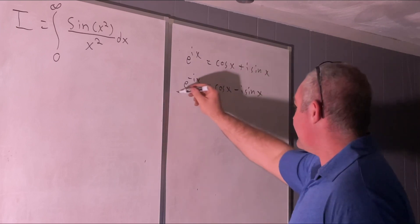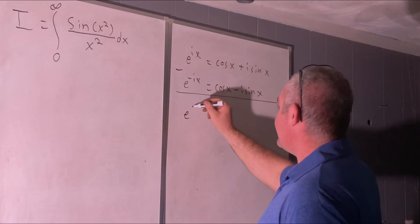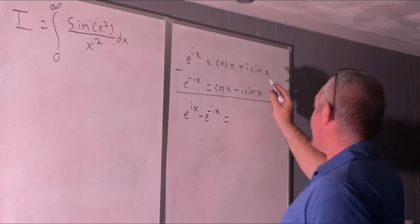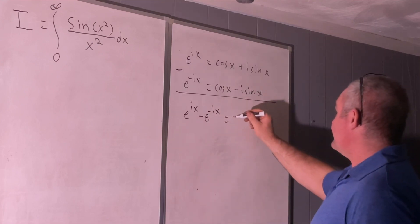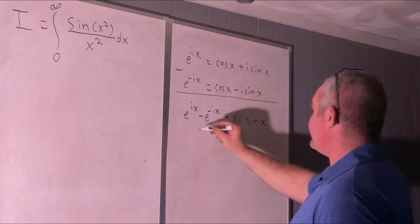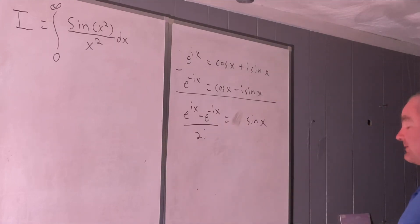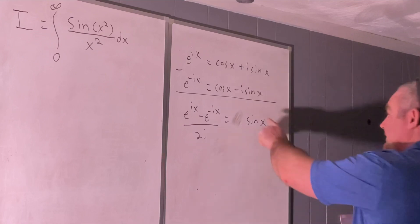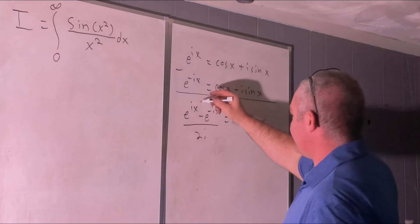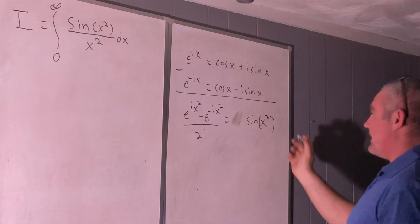Subtracting these two equations gives us e to the ix minus e to the negative ix equals 2i sine x. Then dividing both sides by 2i gives us the exponential representation for the sine function. We will be using this and plugging it in, noticing that you can just replace x with x squared in each of those instances.